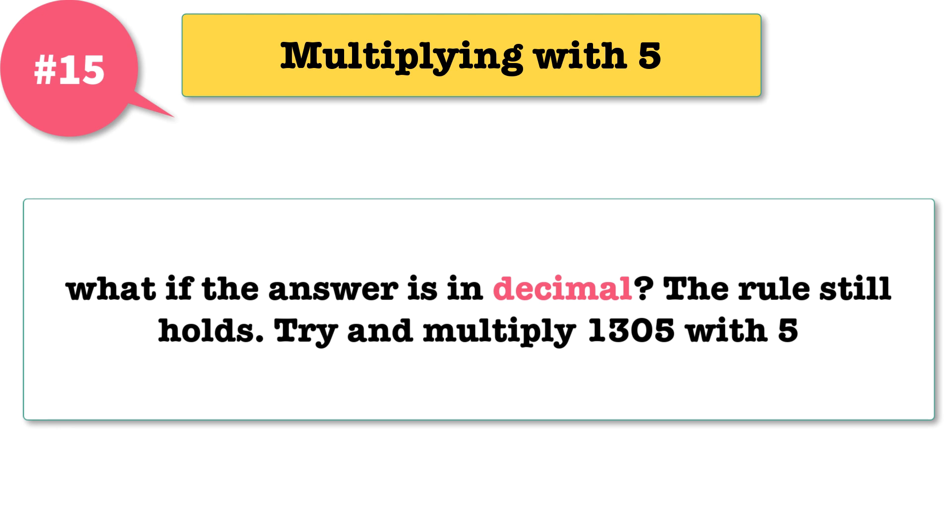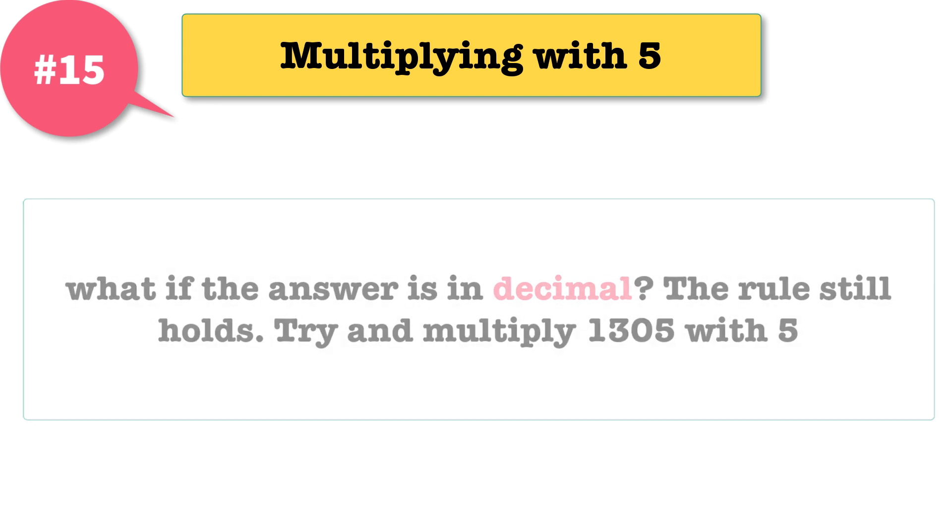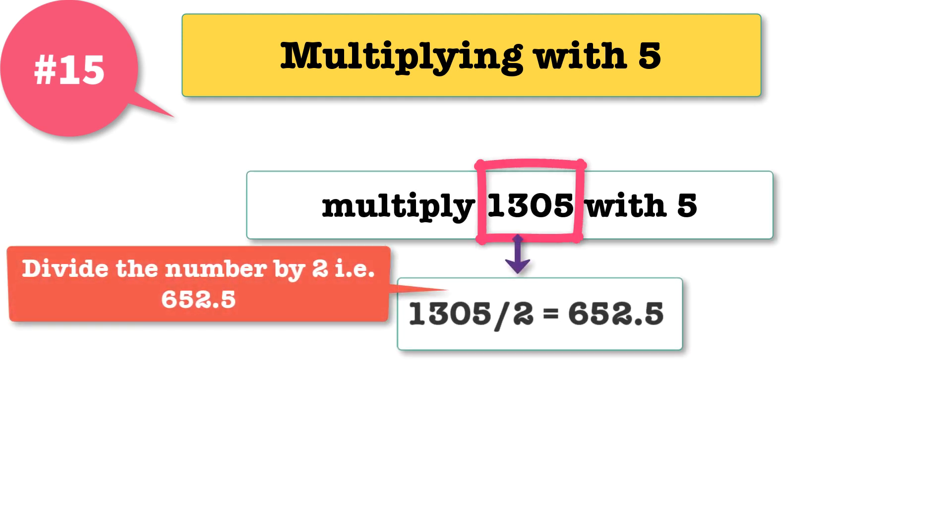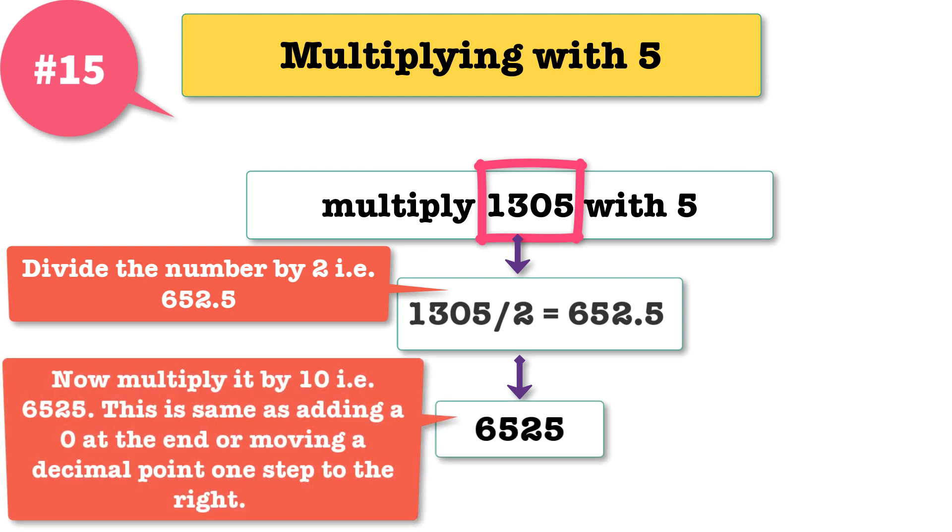But wait, what if the answer is in decimal format? The rule still holds. Try and multiply 1305 with 5. Step 1: divide the number by 2, that is 652.5. Step 2: now multiply it by 10, that is 6525. This is same as adding a 0 at the end, or moving a decimal point one step to the right.